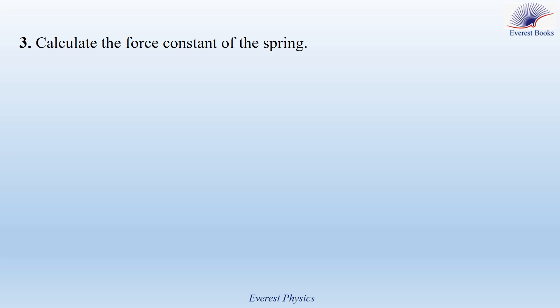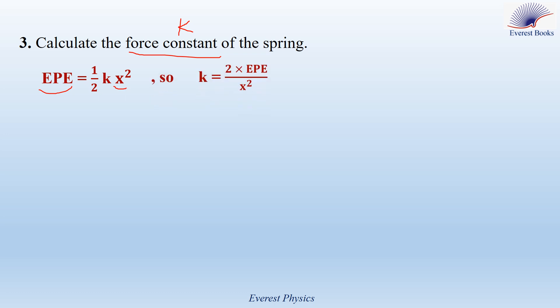Question 3: calculate the force constant of the spring. Using the formula EPE = ½Kx², where EPE and x are both known, we solve for K = 2·EPE / x². Substituting EPE = 0.25 J and x = 10 cm = 0.1 m, we get K = 50 newtons per meter.